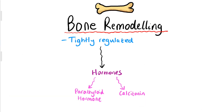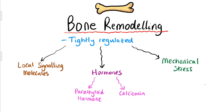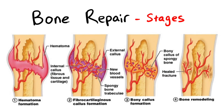Bone remodelling is tightly regulated by various factors including hormones such as parathyroid hormone and calcitonin, as well as mechanical stress and local signalling molecules. Hormones play a crucial role in maintaining calcium balance in the body and regulating bone turnover. Mechanical stress, such as weight-bearing activity, stimulates bone formation in response to increased demands.